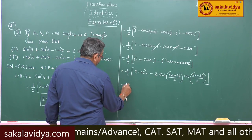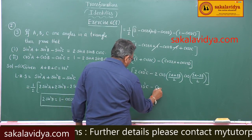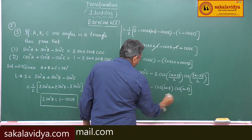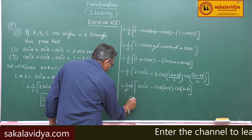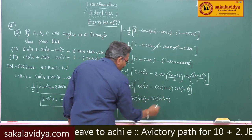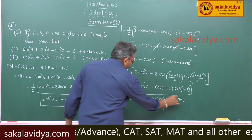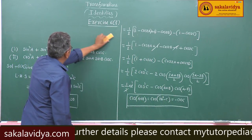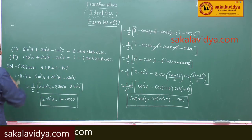Taking 2 common, with 1/2 outside, the 2s cancel. Now we have to change cos(a plus b). Since a plus b plus c equals 180 degrees, cos(a plus b) equals cos(180 degrees minus c), which equals minus cos c.